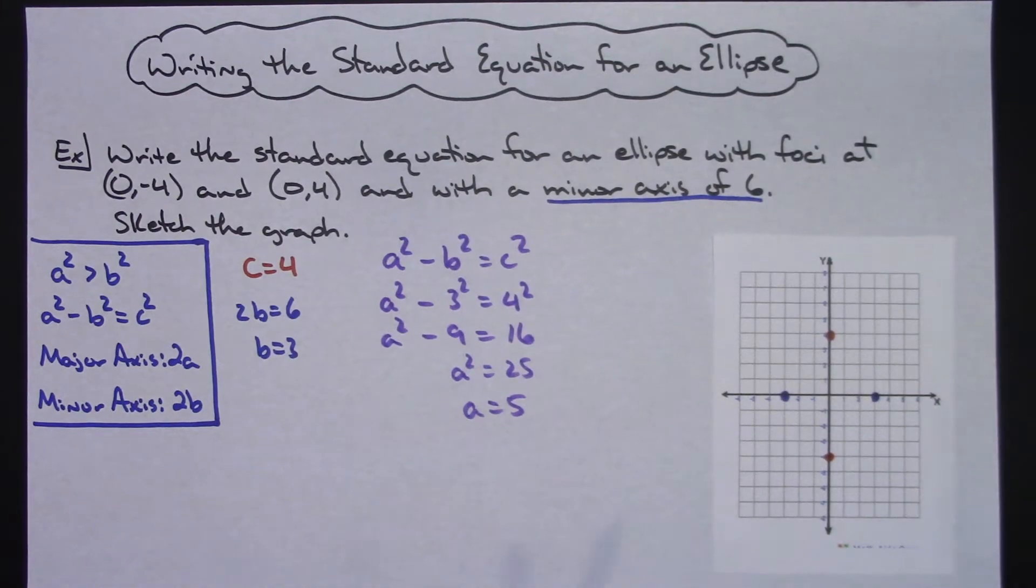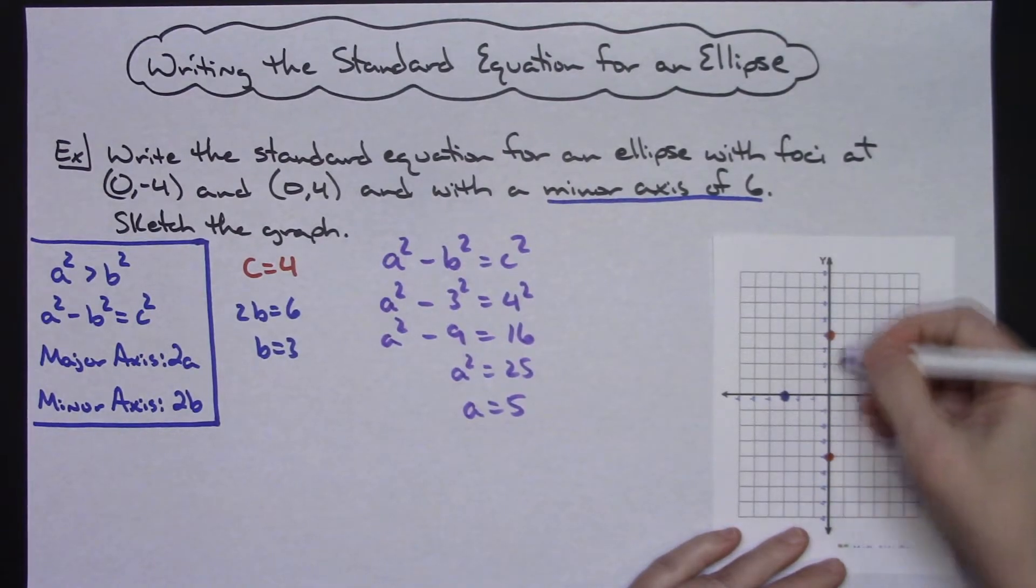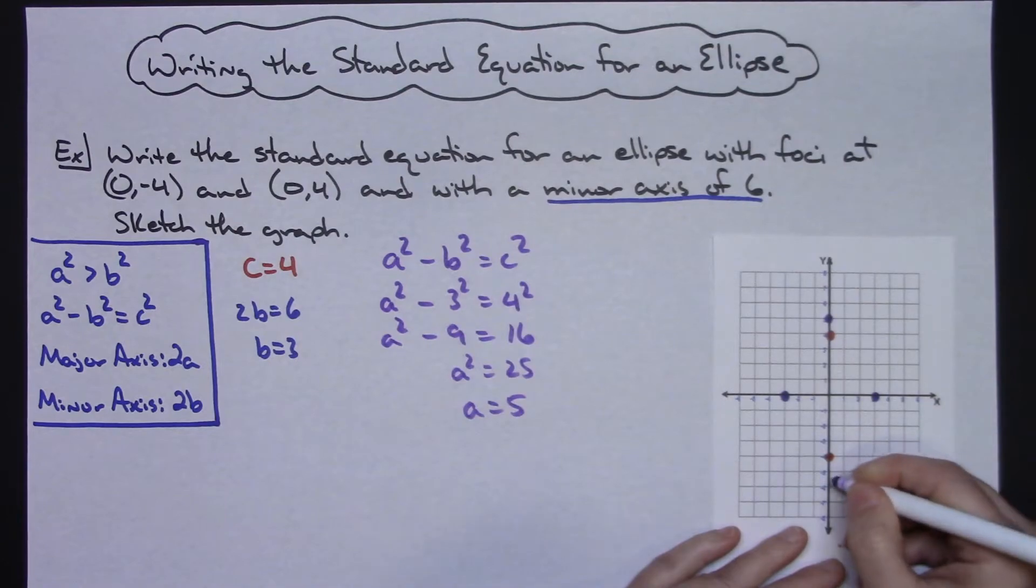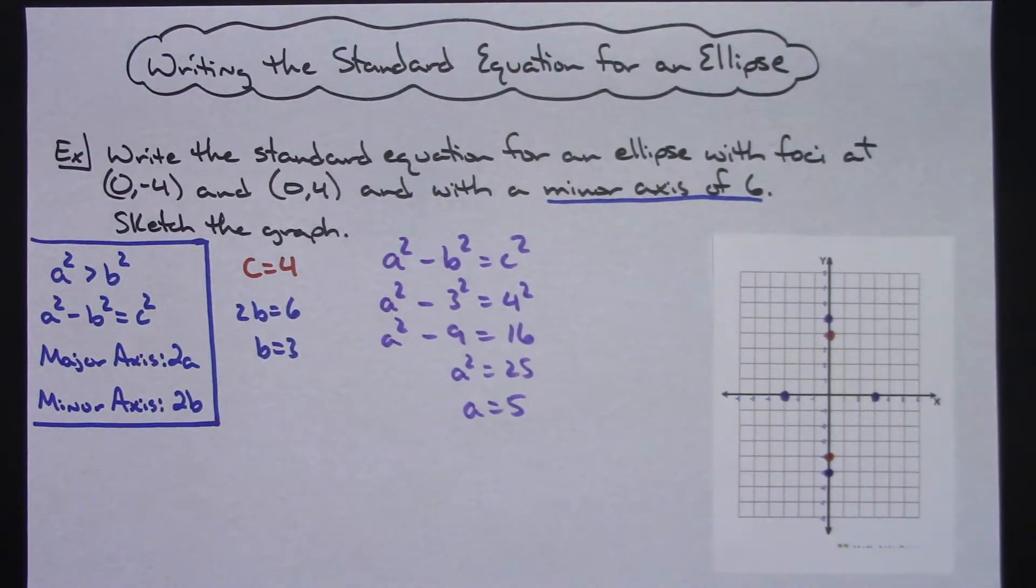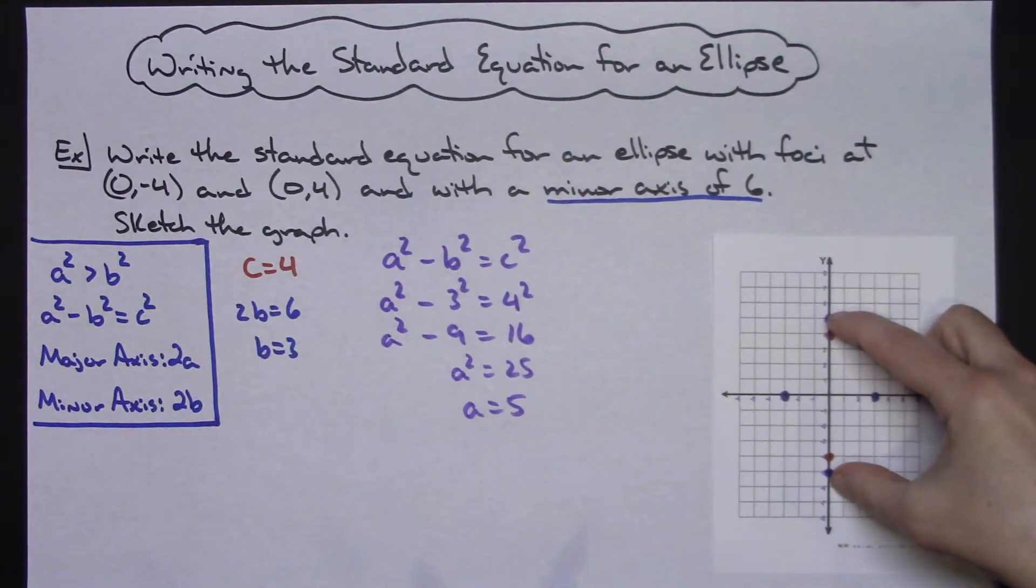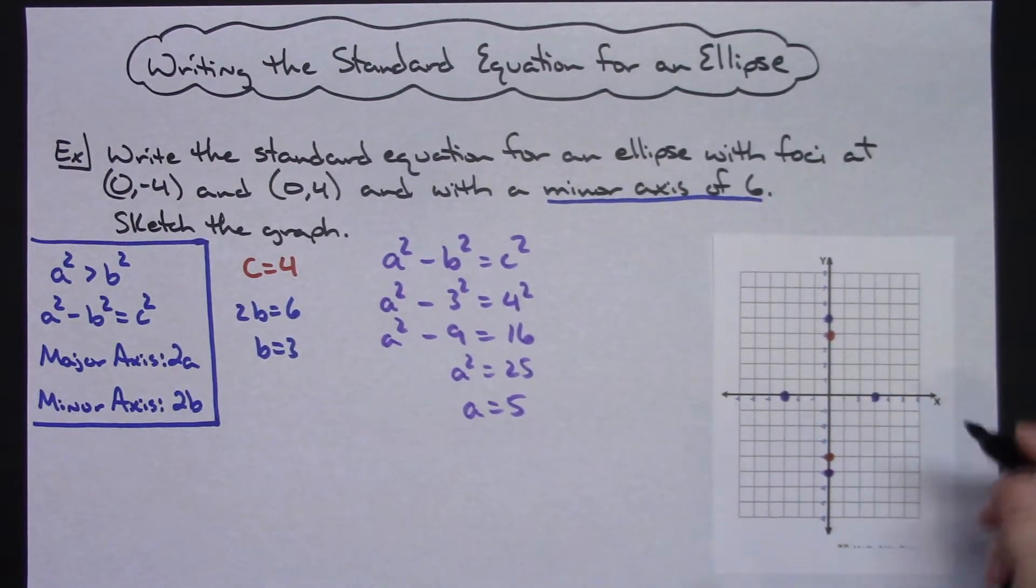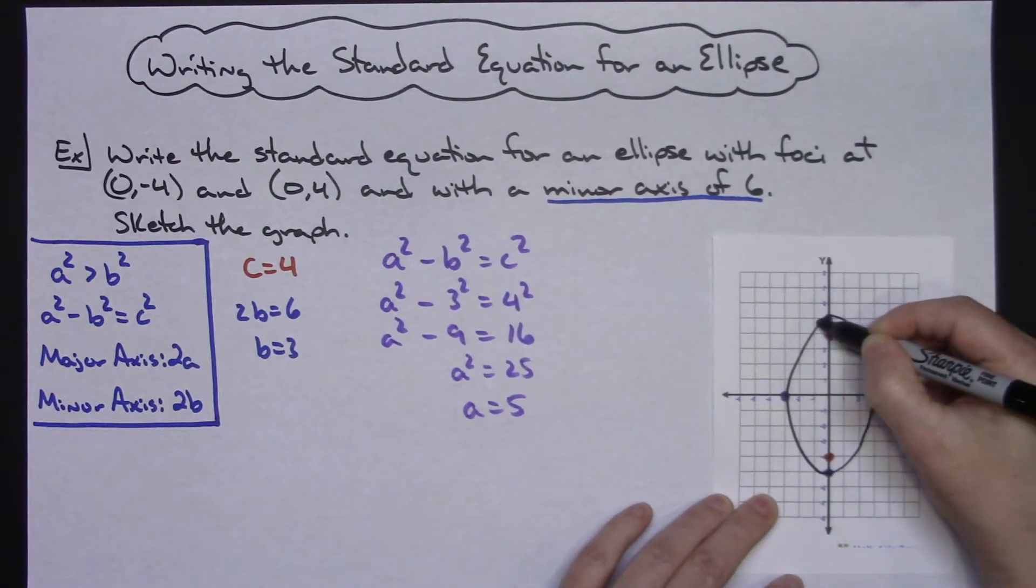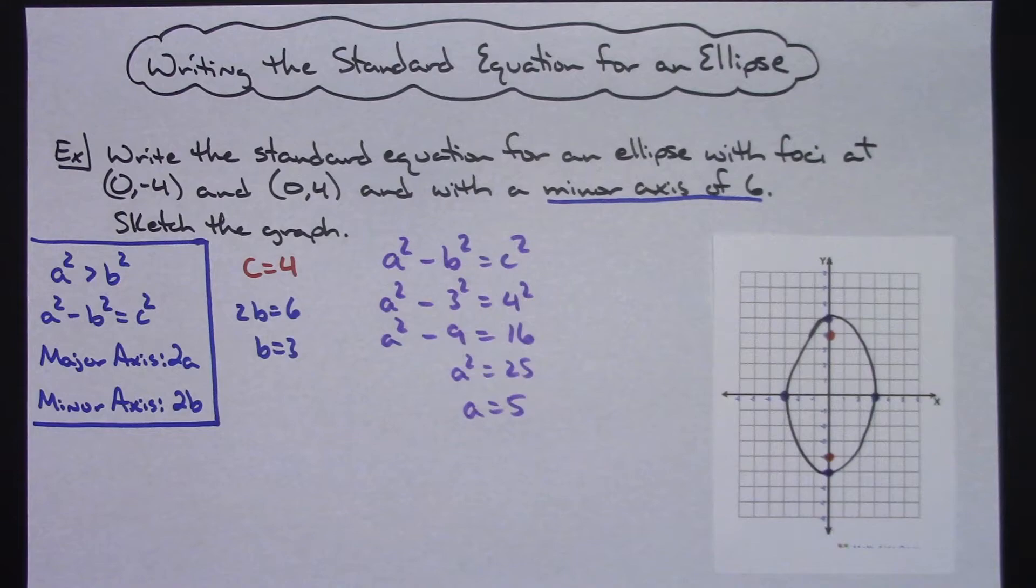So that's going to be the length of my major axis. So major axis is going this way. So I can go up to 5 and then down to negative 5 right there. So I have both my endpoints to my major axis and my endpoints to my minor axis. So I really think I'm ready to sketch at this point. I have a bad sketch there, but not too bad. So I've got my sketch done.